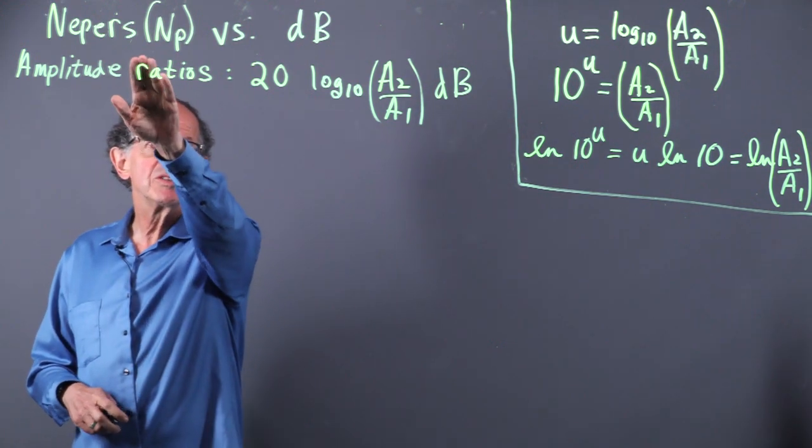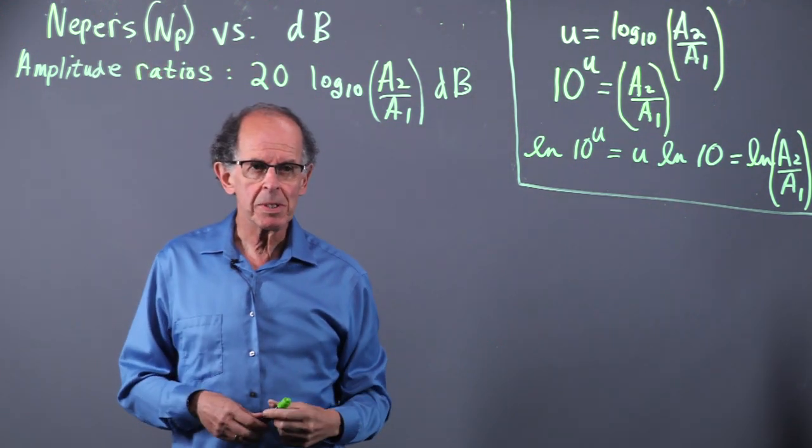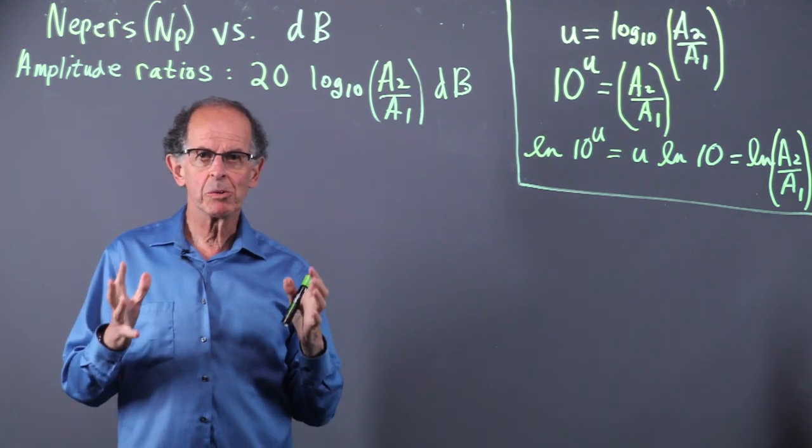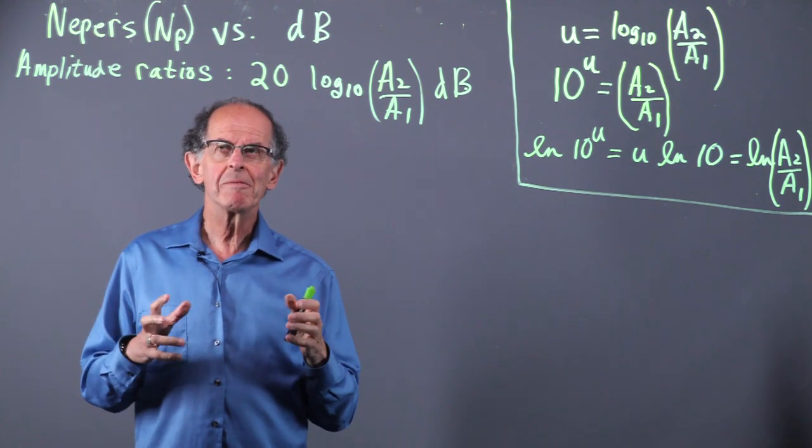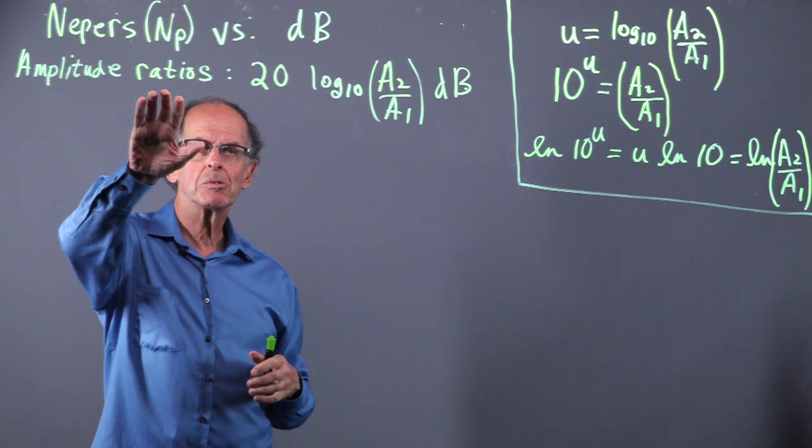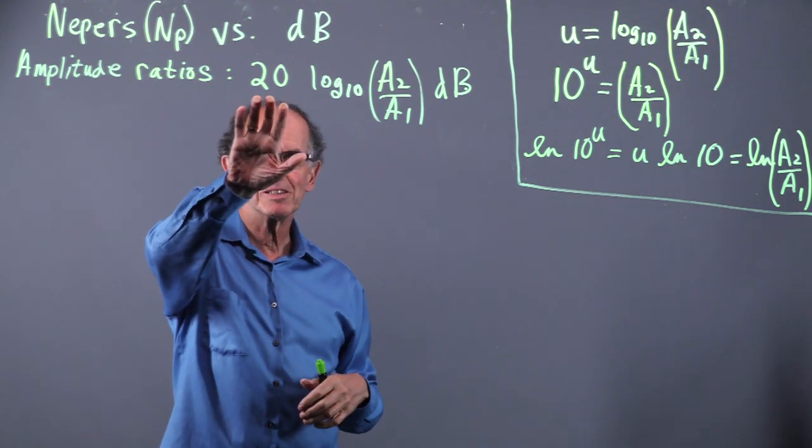We are going to talk about NIPRs versus dB. So we're talking about ratios of amplitude. Amplitude ratios conventionally are done in dB.